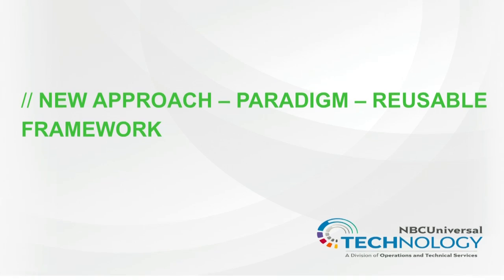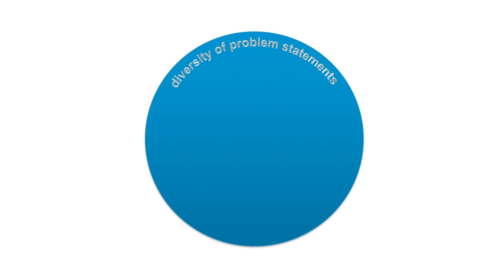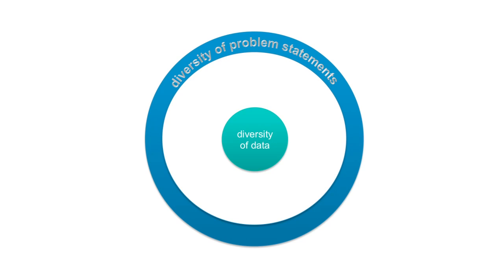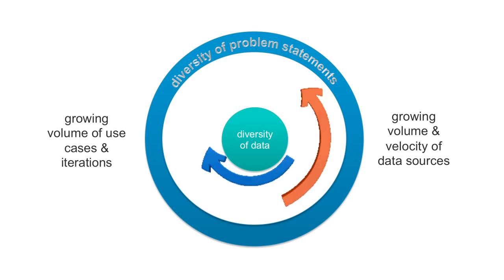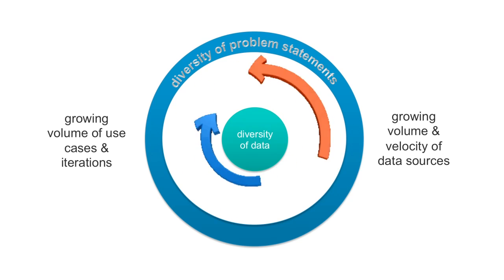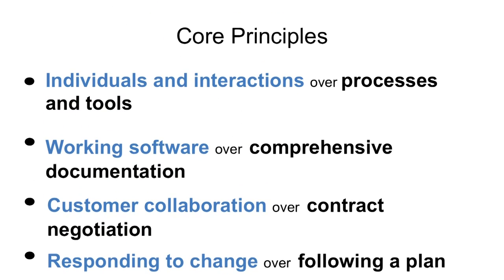We realized we've got a diversity of different problem statements. We've got a huge amount of first-party data, we can leverage third-party data, and we happen to be a child company of Comcast so there are probably some data synergies there too. We've got a growing volume of these different data sources and we need to start leveraging them so that we can come up with better solutions.